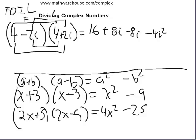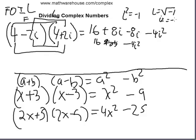8i minus 8i gives us zero, so we have 16 minus 4i squared. Since i is the square root of negative 1, i squared equals negative 1. So this becomes 16 minus 4 times negative 1, or 16 plus 4, which equals 20.